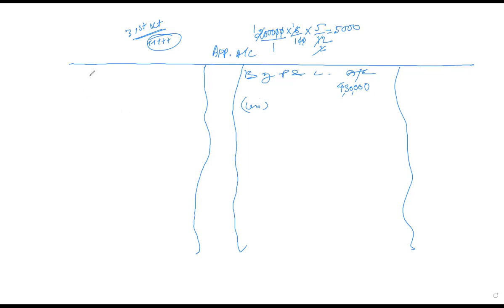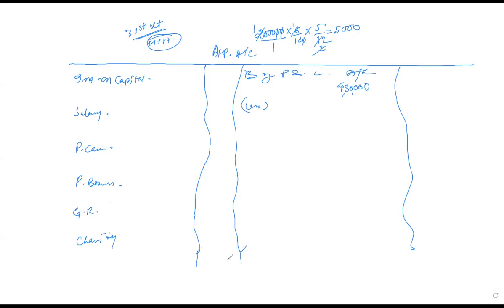This five thousand is subtracted from inside the appropriation account, not written on the debit side, because the debit side is reserved for partner-related items: interest on capital for partners A and B, salary, partners' commission, partners' bonus, general reserve, charity, etc. Since interest on loan belongs to P&L Account, we subtract it inside, giving us four lakh twenty-five thousand as the amount transferred from P&L to Appropriation.